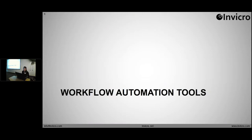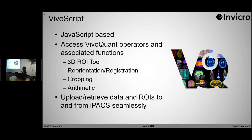Some workflow automation tools: I'm going to cover three and go through how you can incorporate these into a real workflow and how they work together. First, VivoScript — many of you have heard of it. It's a JavaScript-based language developed in-house by the VivoQuant team. It allows you to access VivoQuant operators and their associated functions — for example, the 3D ROI tool, the registration operator, and the cropping and arithmetic operators through scripts. It also allows you to upload, filter, and retrieve data and ROIs to and from the IPACS very seamlessly. The two function together very well.